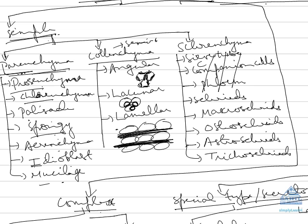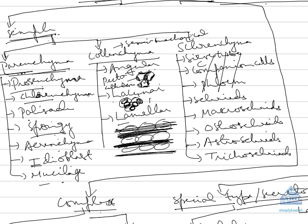Colenchyma are called semi-mechanical tissues because they have deposition of pectin and cellulose, known as hemicellulose, at the corners. There are different types: angular colenchyma, where deposition is only at the corners; lacunar colenchyma, where deposition occurs at corners but lacunae are left inside the deposition area; and lamellar colenchyma, where deposition is in the form of lamellae or plates.